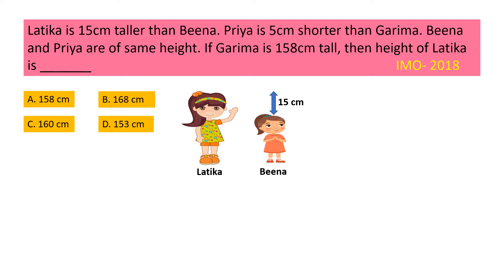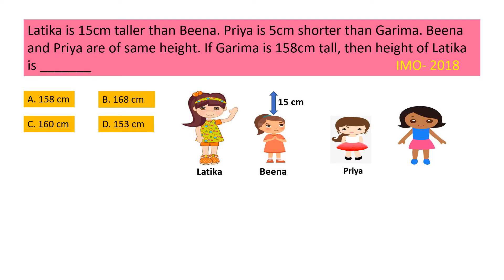Now, Priya is 5 cm shorter than Garima. So who is shorter? Priya, and by how much? 5 cm. That means Priya's height plus 5 cm is equal to Garima's height. Beena and Priya are of the same height.